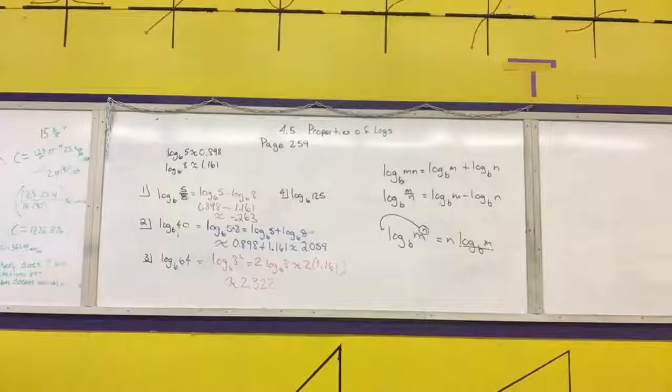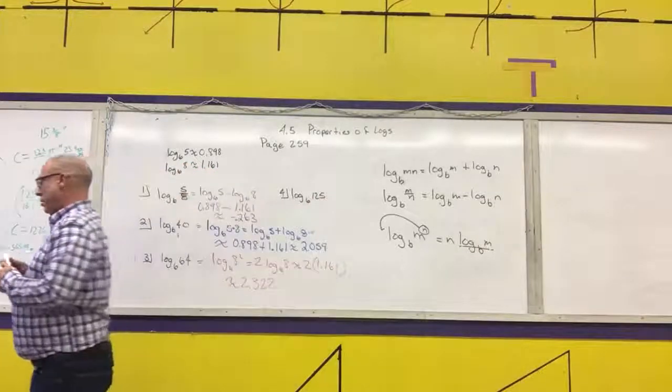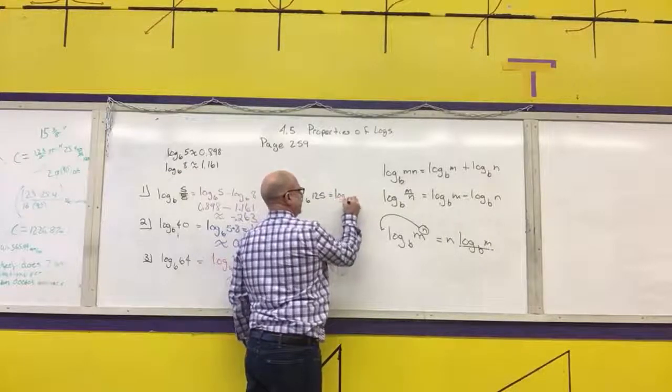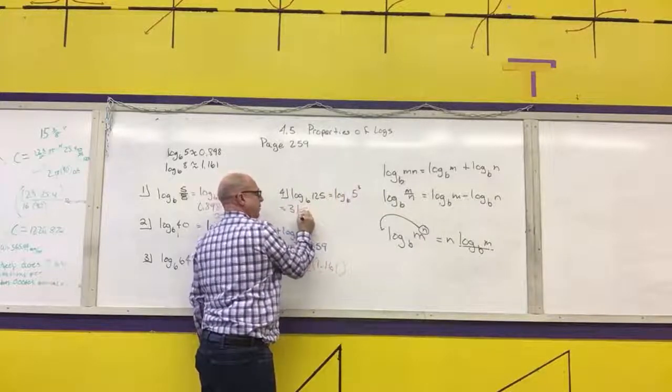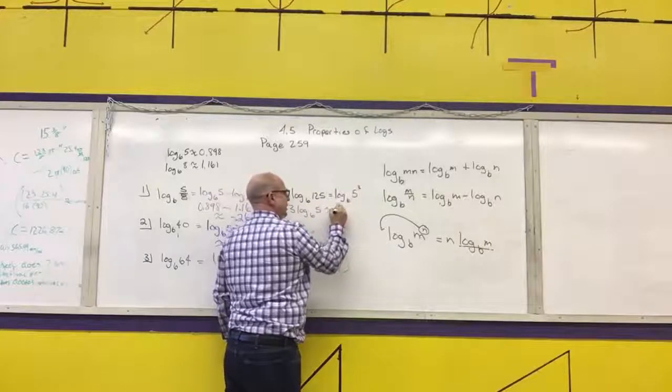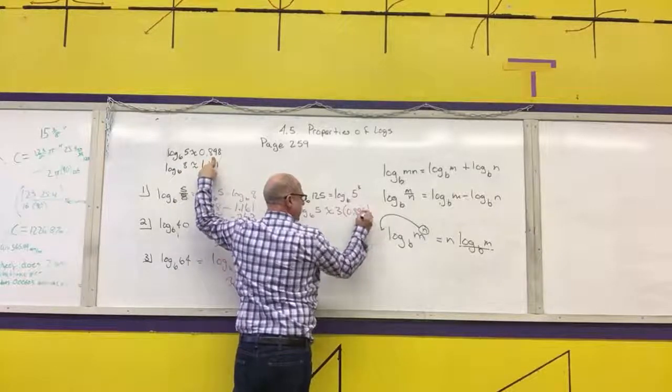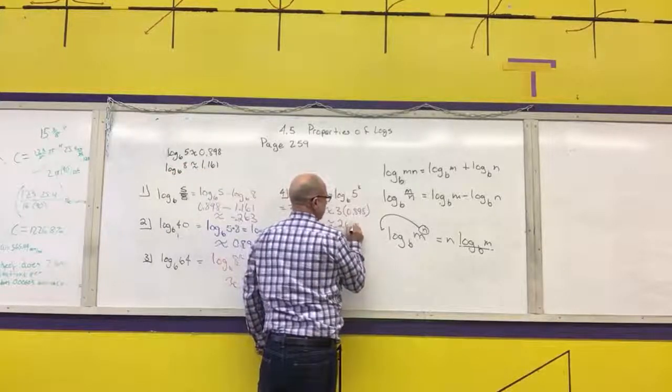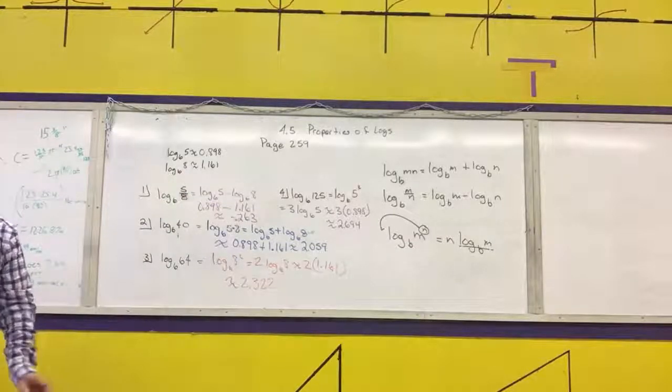Part 3. How can I rewrite 64 as things with 8s in it? 8 times 8 or 8 squared. I'm going to do it as 8 squared. Log base 6 of 8 squared. Using this property, I'm going to put the 2 in front. That equals 2 times log base 6 of 8, which is approximately 2 times 1.161, which would be 2.322.